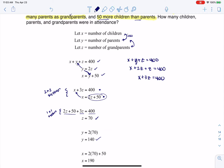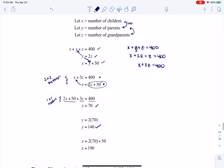Whatever the number of parents is, and it's 140 in this case, add 50 to it, and that's the number of children.